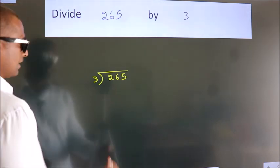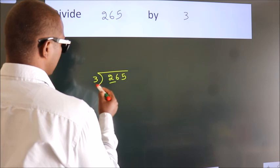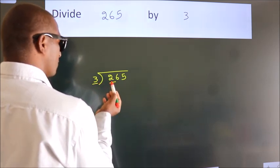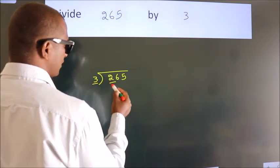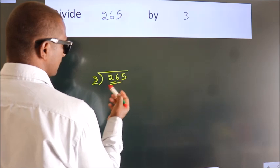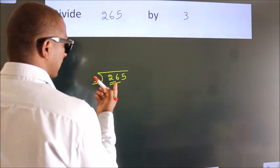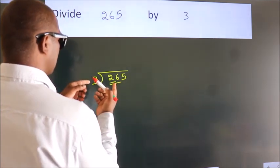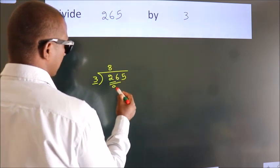Next. Here we have 2, here 3. 2 is smaller than 3, so we should take 2 numbers: 26. A number close to 26 in the 3 table is 3 times 8, which is 24.